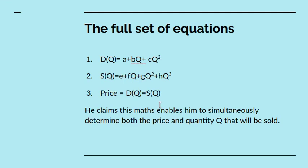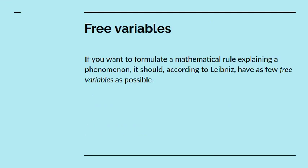But the full set of equations that Marshall has for the determination of price is a demand function a plus bq plus cq squared and a supply function sq equals e plus fq plus gq squared plus hq to the power of 3. And he then says the equilibrium is given by dq equals sq. And he claims that his maths enables him to simultaneously obtain the price that will obtain and the quantity that will be sold. Well just as a piece of deduction, that's fair enough. But note that he's got seven free variables a, b, c, e, f, g and h. Now where do these come from? As I said, he just makes them up.